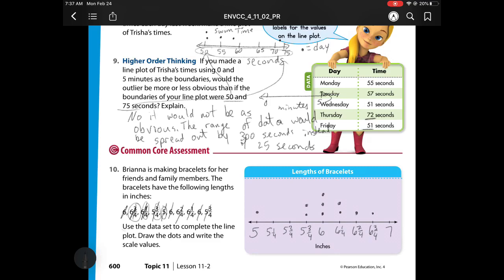So we've used the data to complete the line plot, draw the dots, which we did, and write the scale values. So my scale is what? Scale is what are we counting by. Well, to get from one to the next, I'm counting by a fourth. So my scale value is 1 fourth of an inch. All right, that's it.